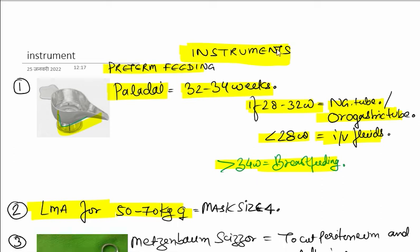Hello friends, today we are going to revise a few instruments in very fast mode. So first is the paladai. This is used in pre-term feeding. If baby is 32 to 34 weeks of gestation, we can give milk from the paladai for oral feeding.